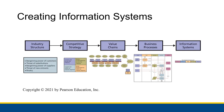So really, the idea is that in order for us to even create information systems, we have to have an understanding of the structure of the industry that we're working in — the customers, the suppliers, the competitors, all of that kind of stuff. From there, we have to create the competitive strategy that our business needs to follow. And then we can determine the value chains, the systems that actually generate value for our business.